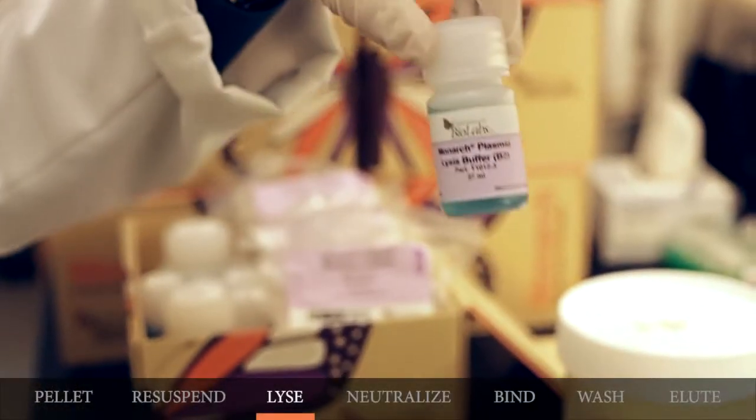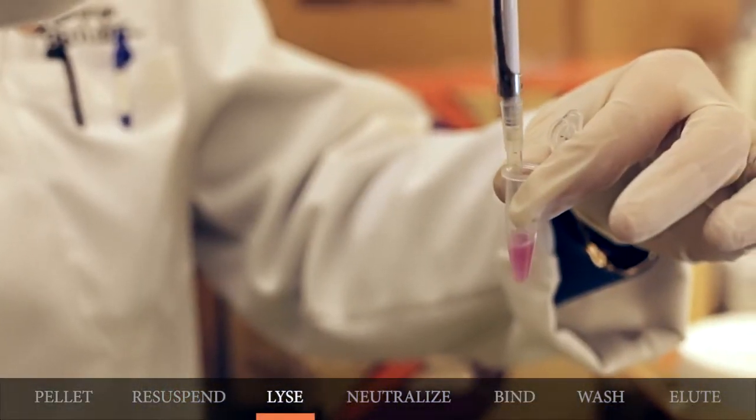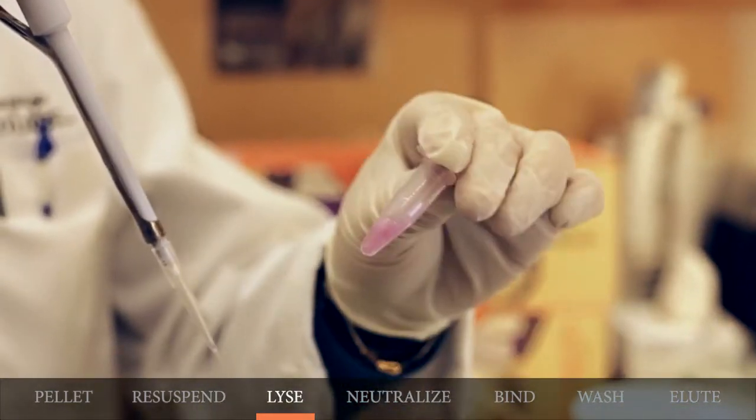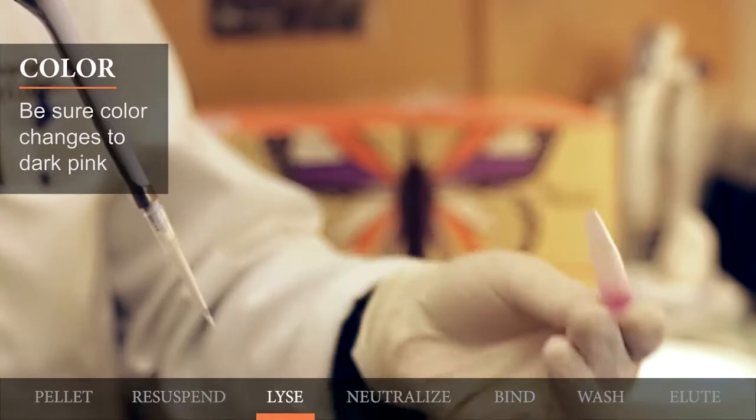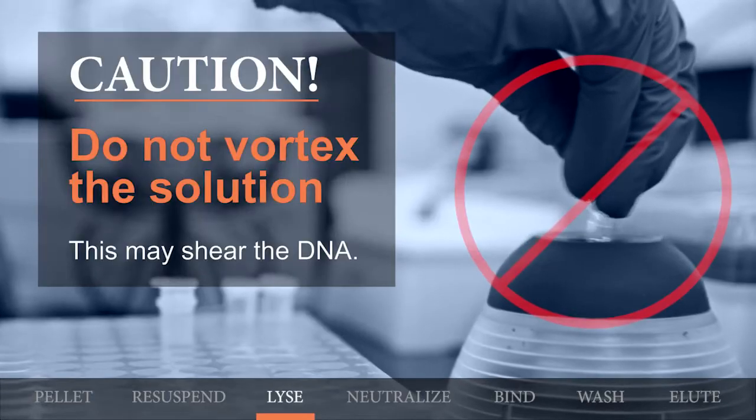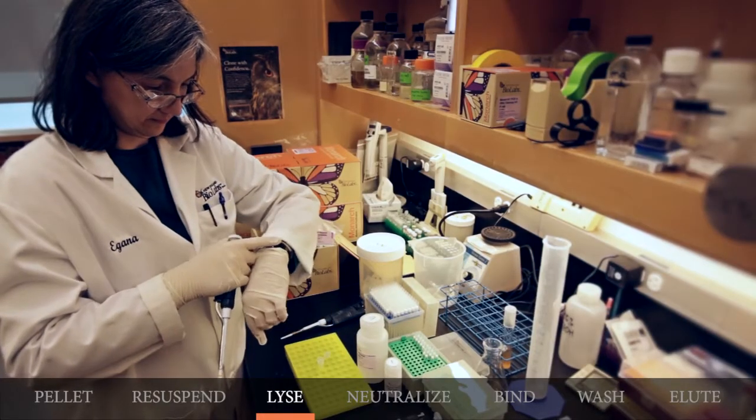To lyse the cells, you will add 200 microliters of Plasmid Lysis Buffer B2 to the cell suspension. Immediately and gently, invert the tube five to six times until the color changes to a dark pink and the solution is viscous. Please do not vortex the solution since this can shear the DNA.